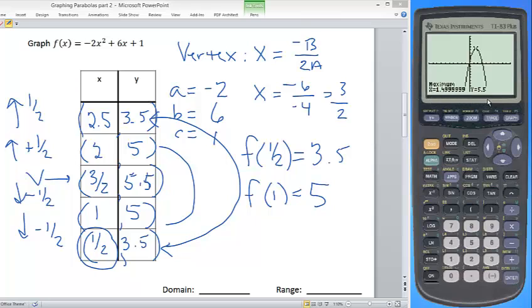And hit enter for a third time. This gives me my maximum or my vertex. 1.499999 is the same as 1.5 or 3/2, and then the y value corresponds to my y value of 5.5. So I can use this to always verify that I have gotten the correct vertex when I'm doing my homework.